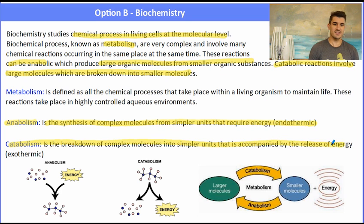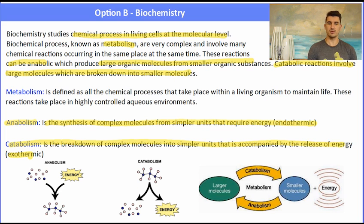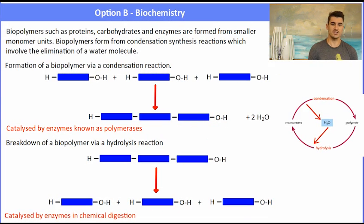So anabolism is the synthesis of complex molecules from simpler molecules, and catabolism is the breakdown of complex molecules into simpler units, usually accompanied by the release of energy. So those ones are exothermic.